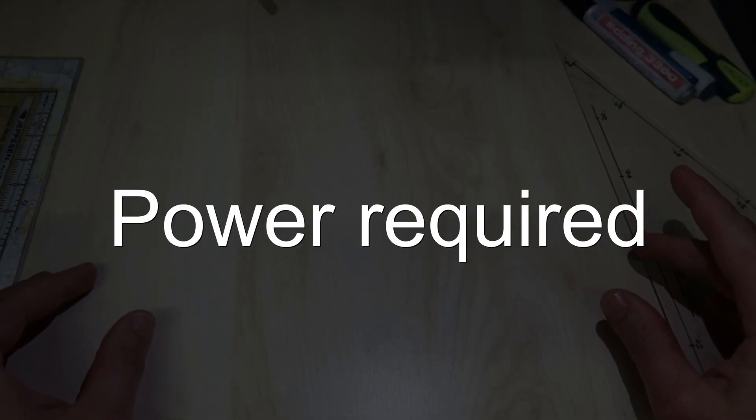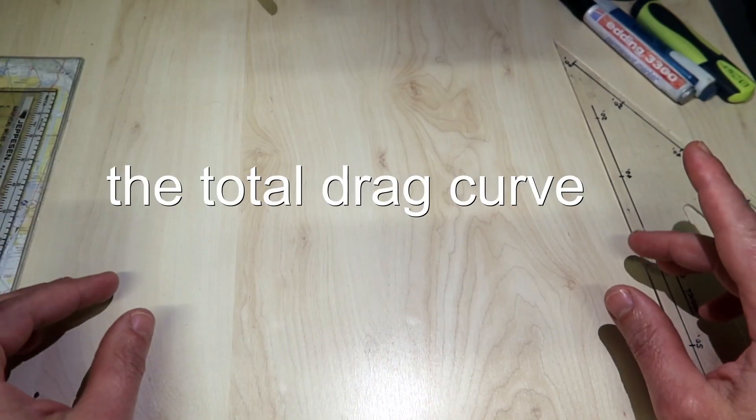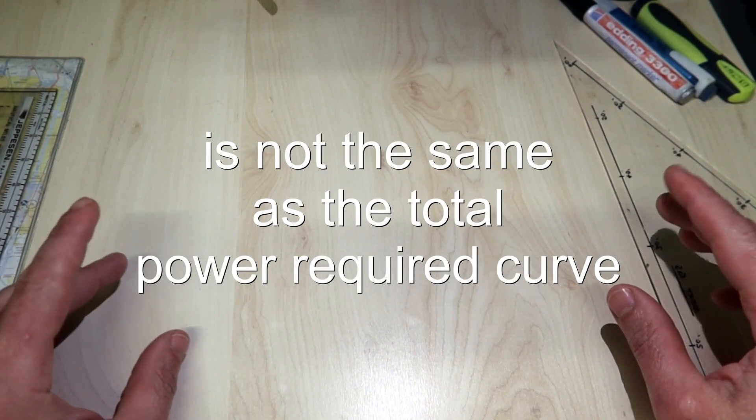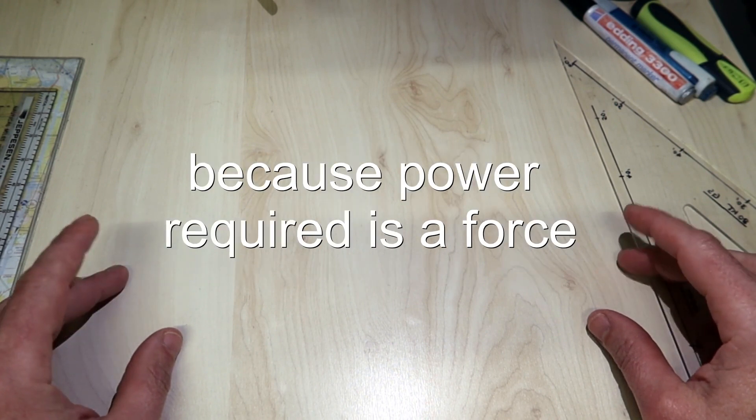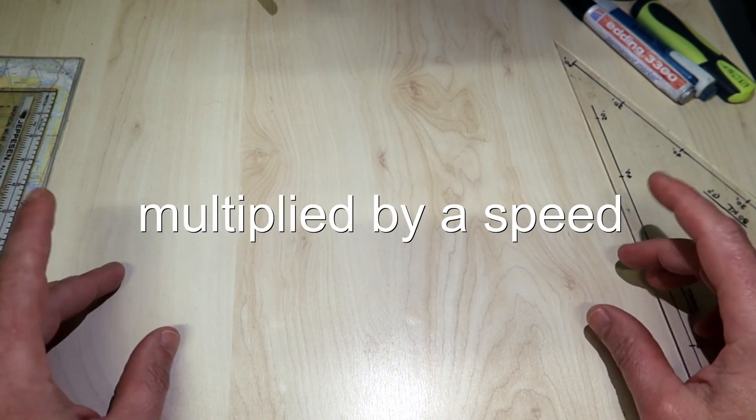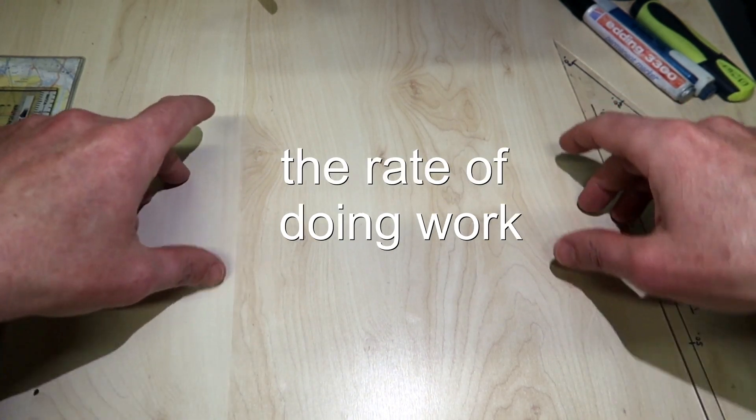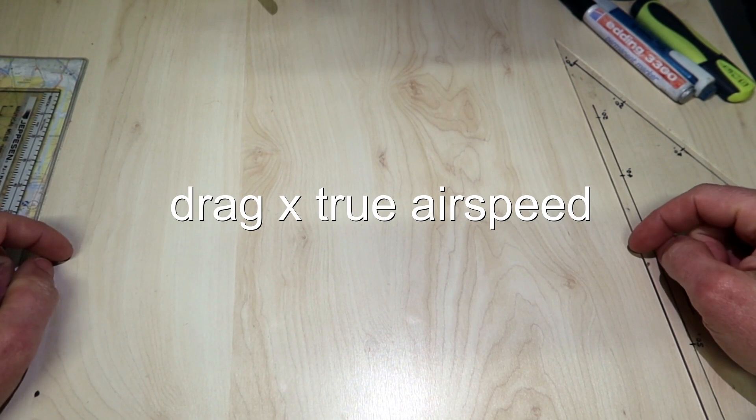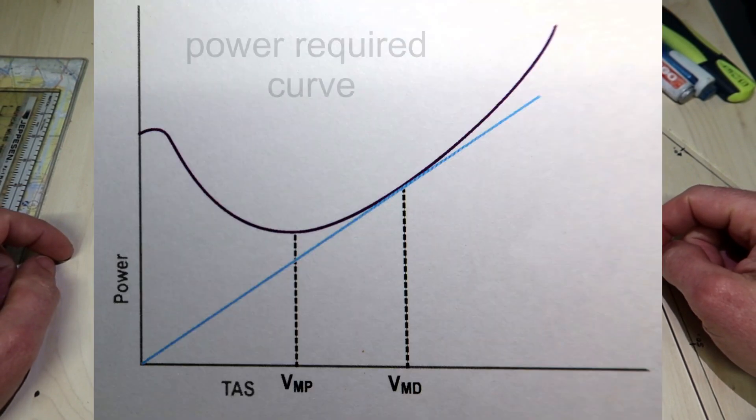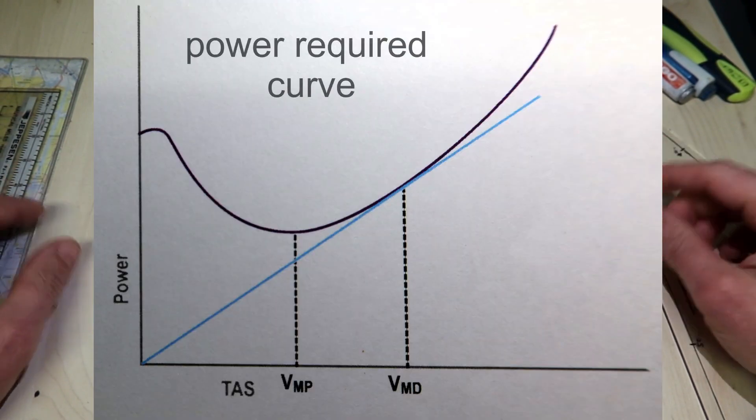The total drag curve is not the same as the total power required curve because power required is a force multiplied by a speed, the rate of doing work. In this case, drag multiplied through airspeed. Apart from its value, it looks very similar to the drag curve.